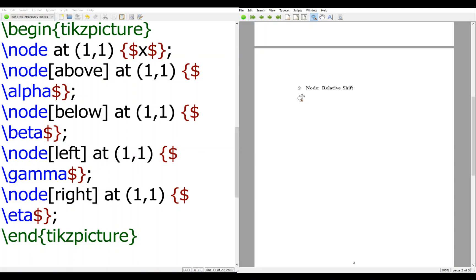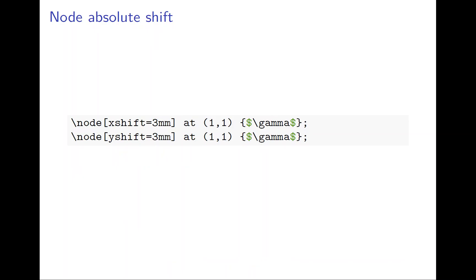Sometimes even relative positioning cannot do the job properly, so you need to further fine-tune. To do so, you can tell it precisely how much you want to shift — this gives you the absolute shift. Here, xshift shifts x by 3mm. If you want to shift to the right it's positive 3mm; if you want to shift to the left it's negative 3mm. Similarly, yshift is a vertical shift: positive goes up, negative goes down.